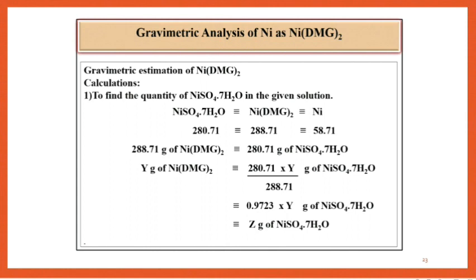To find the quantity of nickel sulfate in the given solution: 280.71 nickel sulfate corresponds to 288.71 nickel DMG corresponds to 58.71 nickel. Therefore 288.71 gram of nickel DMG corresponds to 280.71 gram of nickel sulfate. Y gram of nickel DMG corresponds to 280.71 times y divided by 288.71 nickel sulfate.